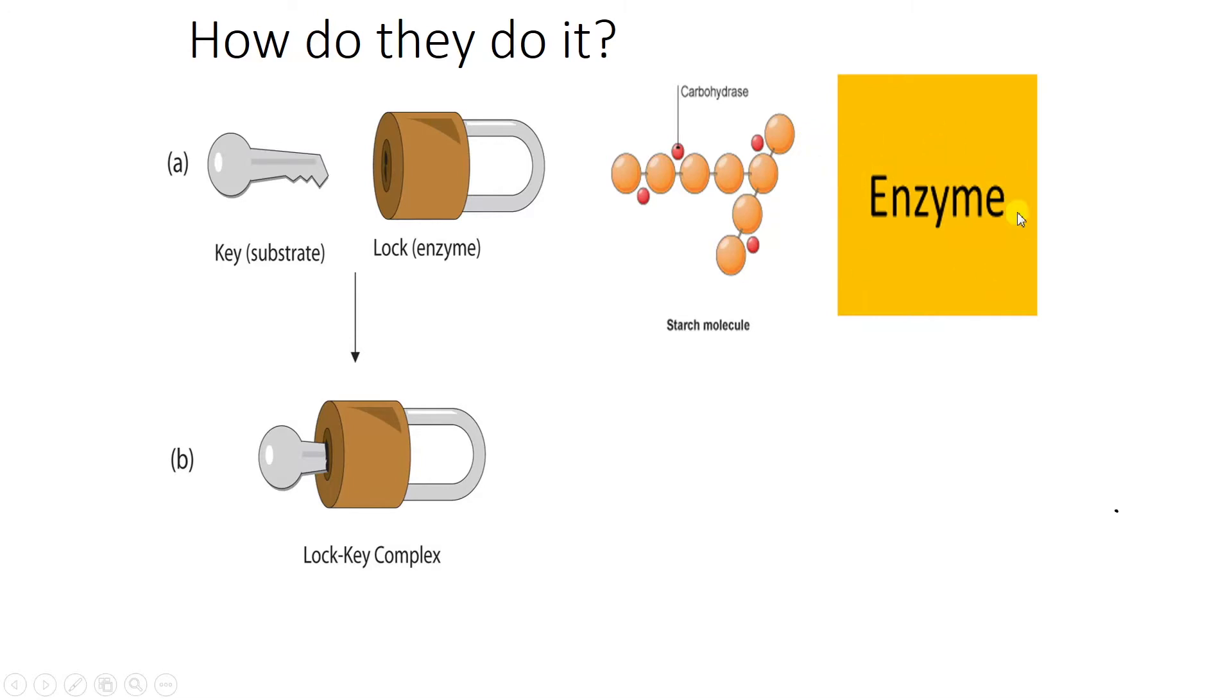Because in reality we have lots of different types of enzymes inside of us just to cope with different jobs. So what happens is in a normal lock and key model, the key would go into the lock and it would twist and then this would unlock. So similarly with an enzyme, your starch molecule will bind with your enzyme. They will join together. It doesn't necessarily go inside like this diagram implies, but it joins together.